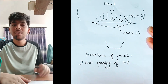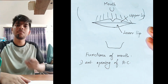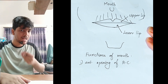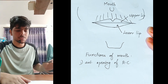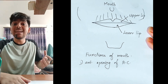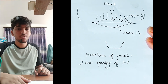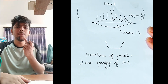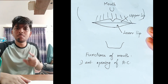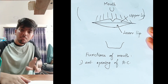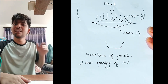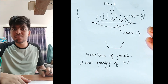Anterior means the front opening — the mouth forms the front opening of the alimentary canal. The anus forms the posterior or back opening of the alimentary canal. Food enters through the mouth, and undigested food exits through the anus.